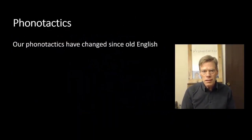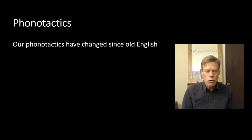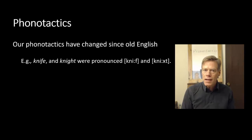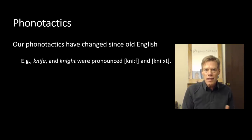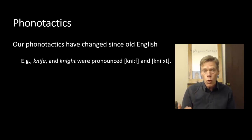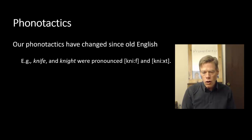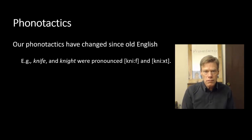It is important to notice that over time, phonotactics can change. The phonotactics of Old English are different than the phonotactics of contemporary English. For example, if we think about our words knife and knight, which have absurd spellings — well, the spellings are absurd because they froze while the sounds changed. At one time, knife would have been pronounced with a long E sound, and knight similarly — so that K was pronounced in both of those words. We had that sequence: KN was perfectly fine.